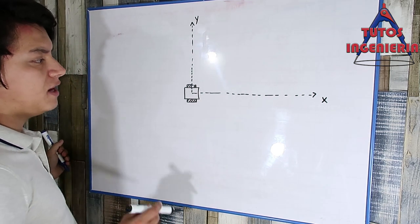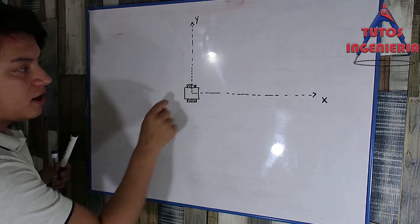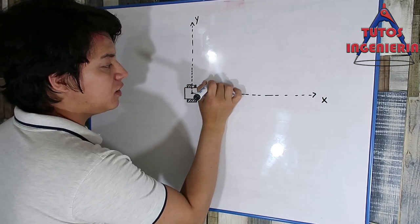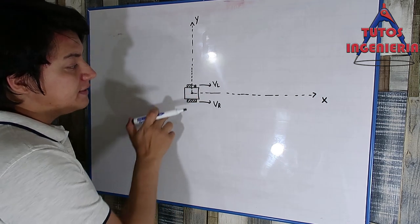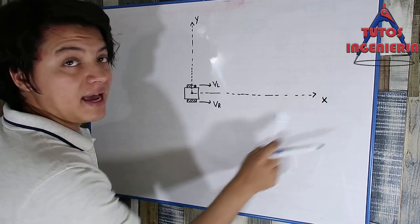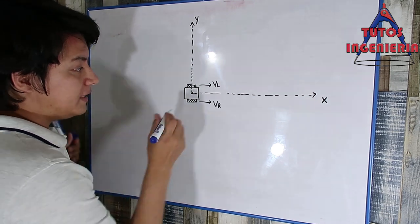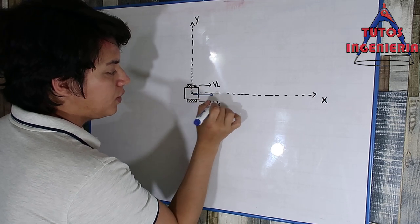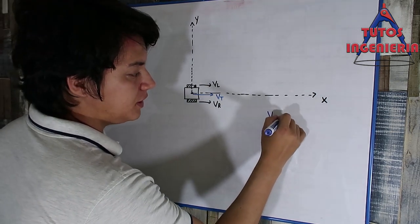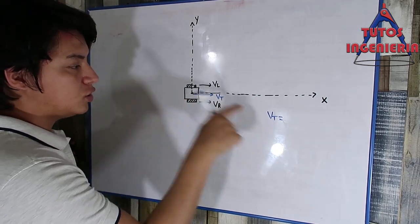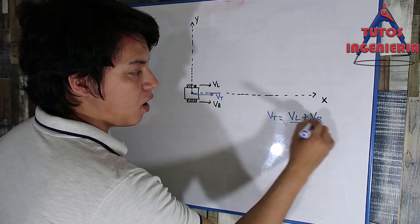In this part we are going to develop the velocity in the x-axis and the y-axis. Here we have the car starting at a point. We have the velocity of the left wheel and the velocity of the right wheel. In this case the car is moving forward along the x-axis, so we can calculate the total velocity of the car as v_t equals the velocity of the left wheel plus the velocity of the right wheel over 2.